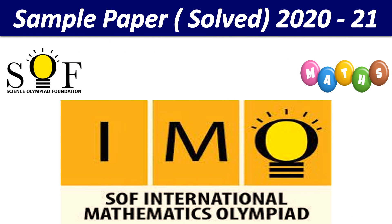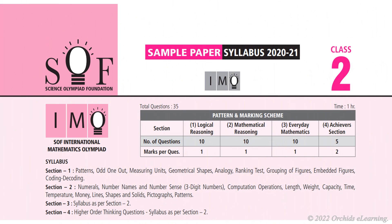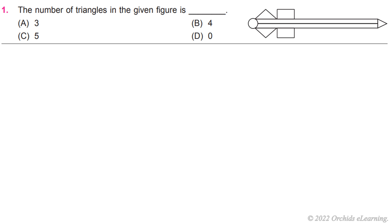Sample paper for IMO for the year 2020 to 2021 for class 2. Question number 1: The number of triangles in the given figure is A) 3.